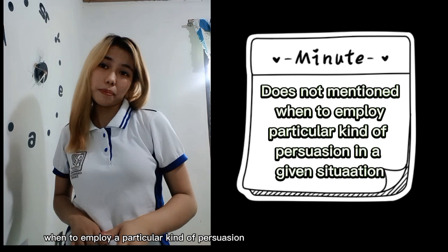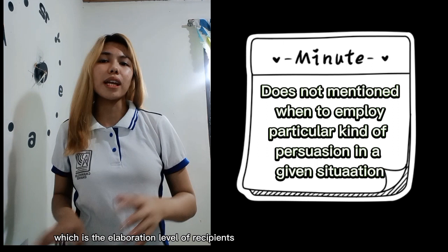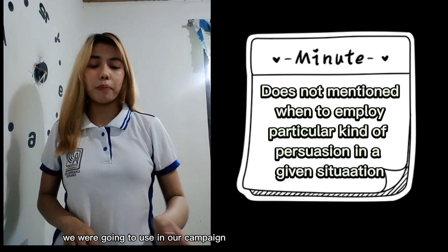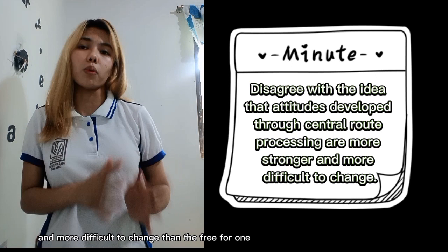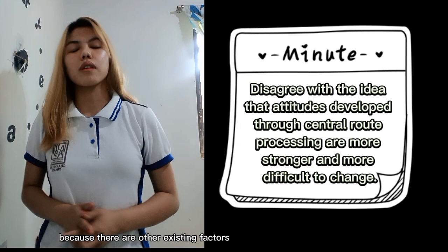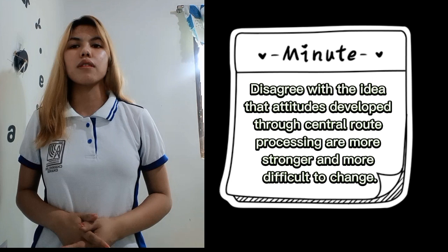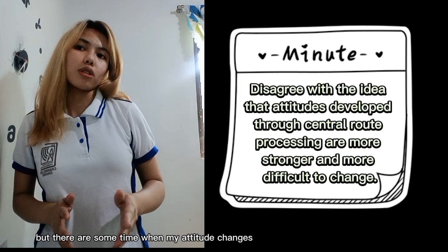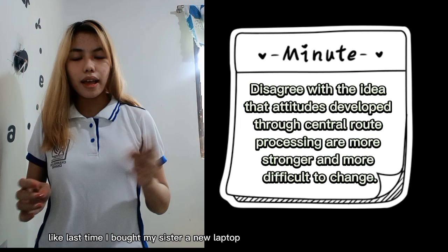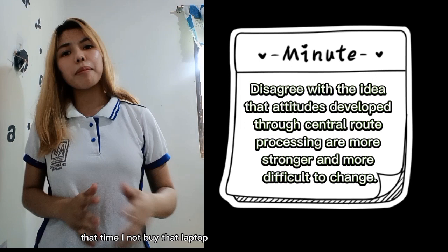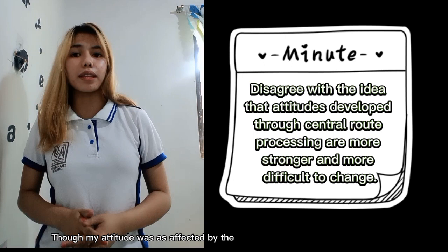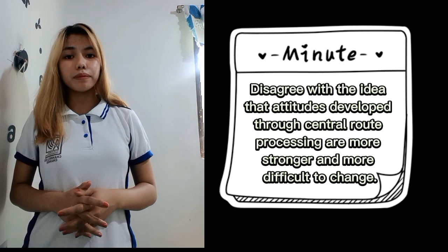When it comes to the bad sides of this model, I've come to realize that it does not tell us when to employ a particular kind of persuasion — we are given only one basis, which is the elaboration level of recipients. I also disagree with the idea that attitudes developed through central route processing will always be stronger and more difficult to change than peripheral ones, because there are other existing factors that may affect attitude change. For example, when I used to buy a laptop, I always looked at the specifications, but sometimes my attitude changed due to other factors — like when I bought my sister a laptop based on her preference for something trendy, similar to her classmates' laptops.